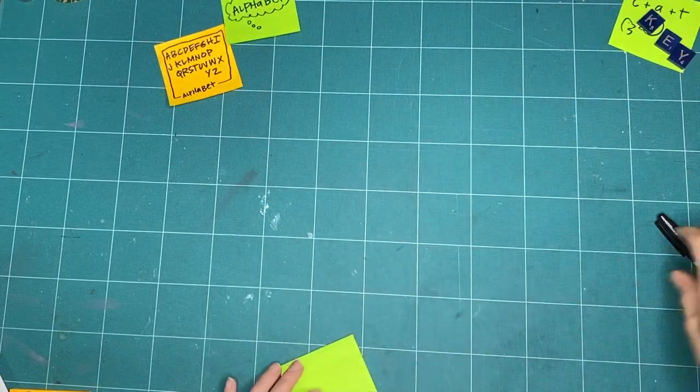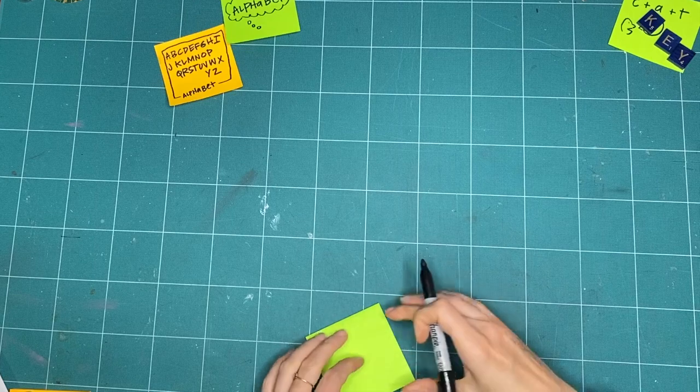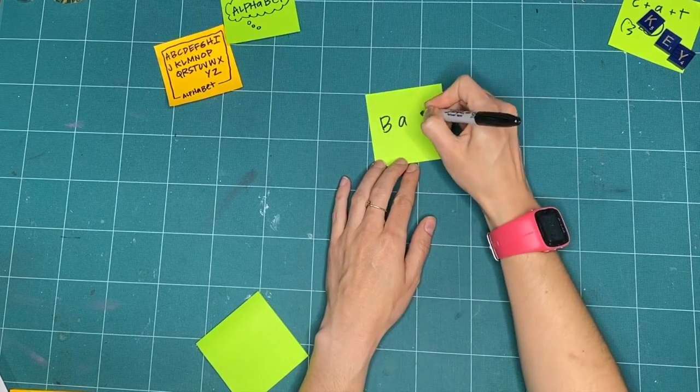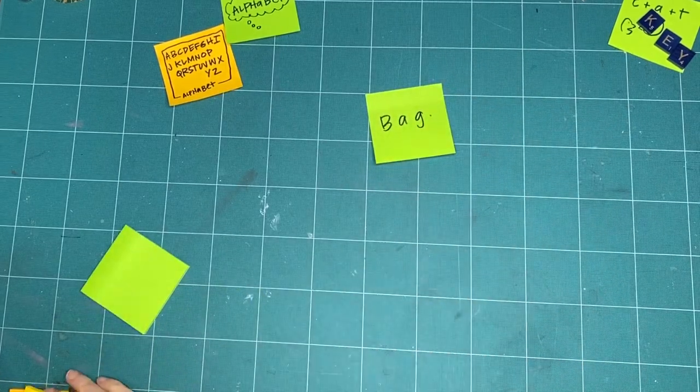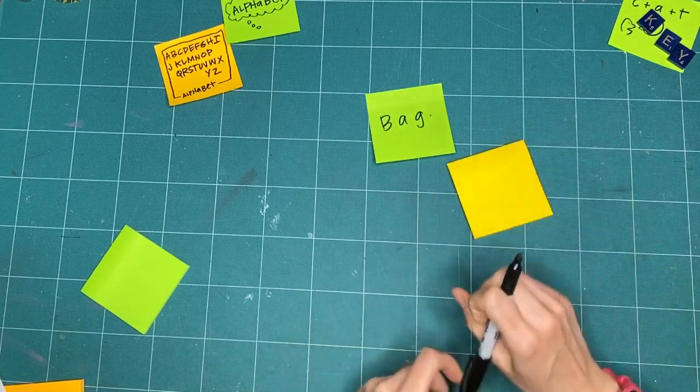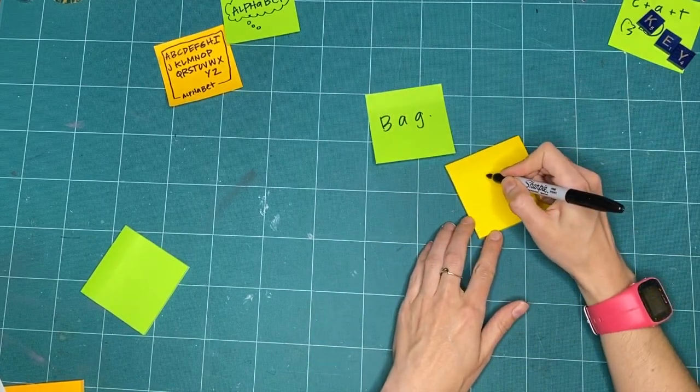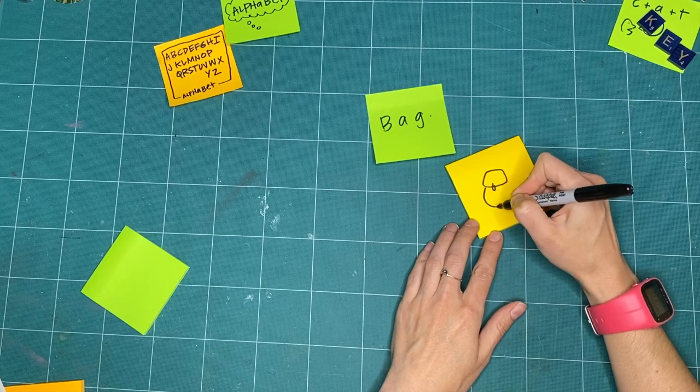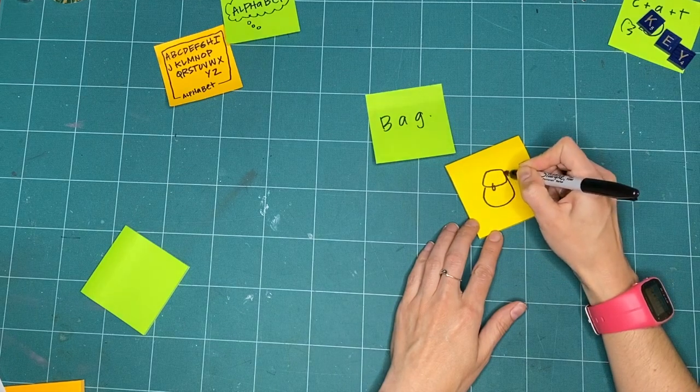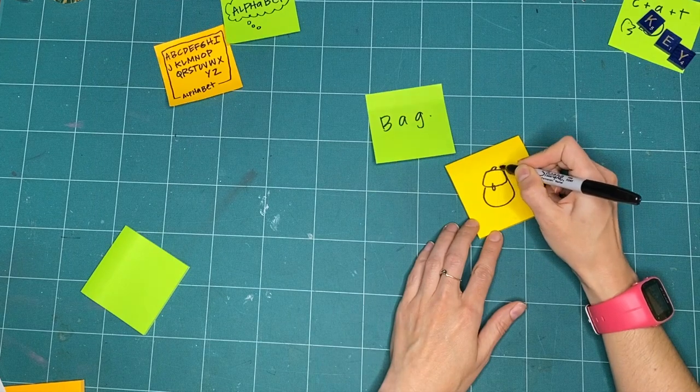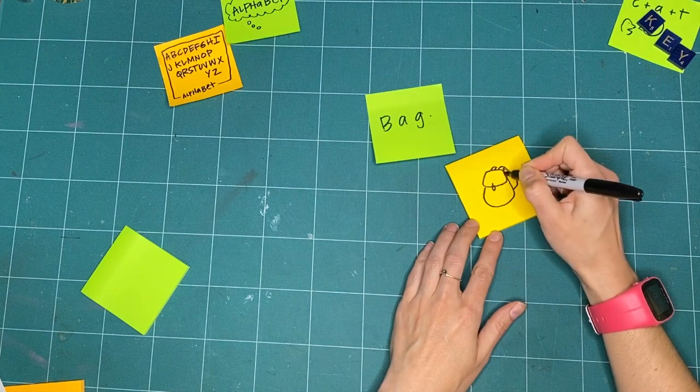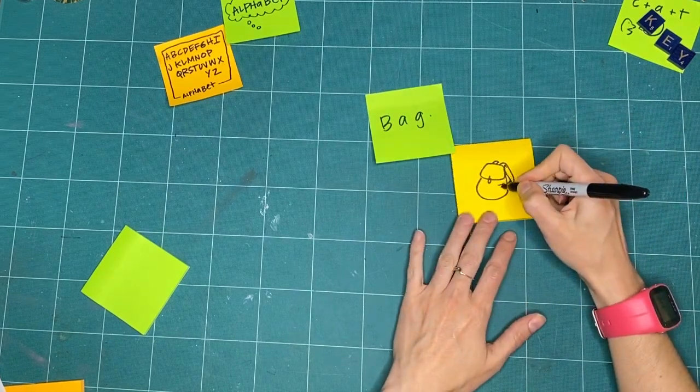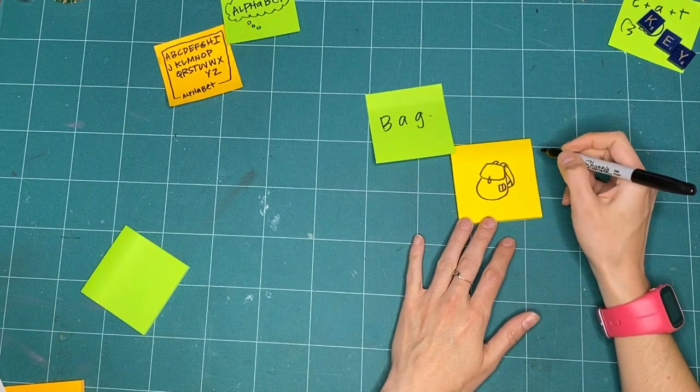Before we start our hands-on activity, I want us to do an imagination activity together. I want you to imagine a bag or a suitcase. Whatever picture you see in your head is great. If you can't see a picture in your brain, that's okay. Here's a picture of what I thought when I said the word bag. You can use it too. Try asking your family and friends what they saw when I said, or when you say, the word bag. Maybe you saw a picture. Maybe you saw the letters B-A-G. Maybe you saw a memory of a bag. Maybe you didn't see anything, but you knew what I meant when I said bag.